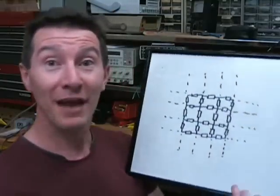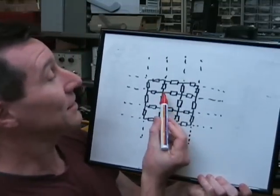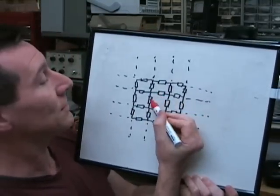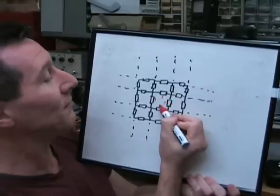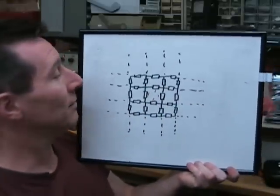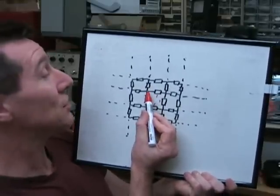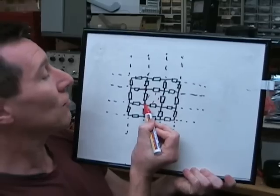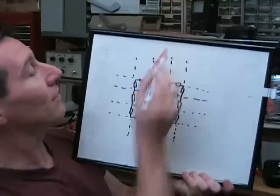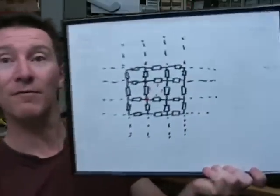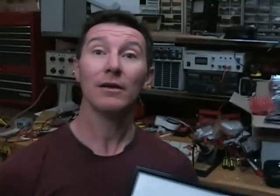It's the infinite resistor problem. Basically, if you haven't seen it, it's a grid of actual resistors and they're all one ohm — they're all the same value. The classic question is: what is the resistance across one of the resistors, if there's a whole grid of resistors going off in infinite directions? The answer is 0.5 times R.